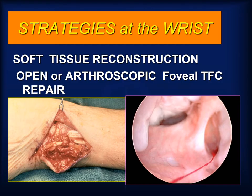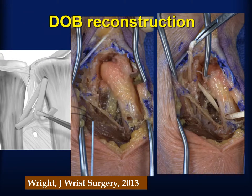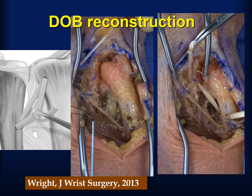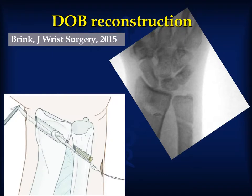The strategy at the wrist addresses the distal radial ulnar joint instability by repairing the foveal attachment of the triangular fibrocartilage in either an open or arthroscopic-assisted fashion. In some cases where such a foveal repair is insufficient and leaves persistent instability, I will reconstruct the distal oblique bundle. Wright has published an excellent method for this reconstruction using a tendon graft from the ulna to the radius. In the axial instability case, this has proven more reliable than an Adams radial ulnar ligament reconstruction. Brink described a less invasive alternative method for distal oblique bundle reconstruction. The bottom line is that a stable distal ulnar joint adds significantly to axial longitudinal stability.